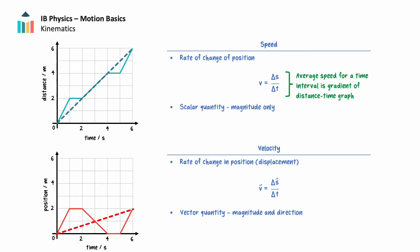The average velocity of an object over a time interval is the gradient of a line on the position-time graph connecting the initial position and the final position, shown by the dashed line. This is the total displacement over the total time. The velocity of any one segment of the journey is the gradient for that segment and may differ from the average velocity. In the first second of motion, the velocity is greater than the average velocity because the gradient of this segment is steeper. However, in the next second, the velocity is slower than the average velocity because the gradient is less steep. In the third segment, the velocity is negative because the gradient is negative, while the average velocity for the entire journey is positive.